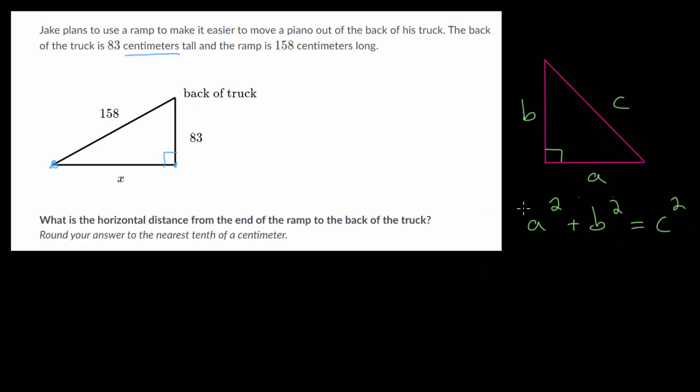So we can use this relationship to set up an equation to find this missing side length. So let's do that. We just need to label what a, b, and c are.